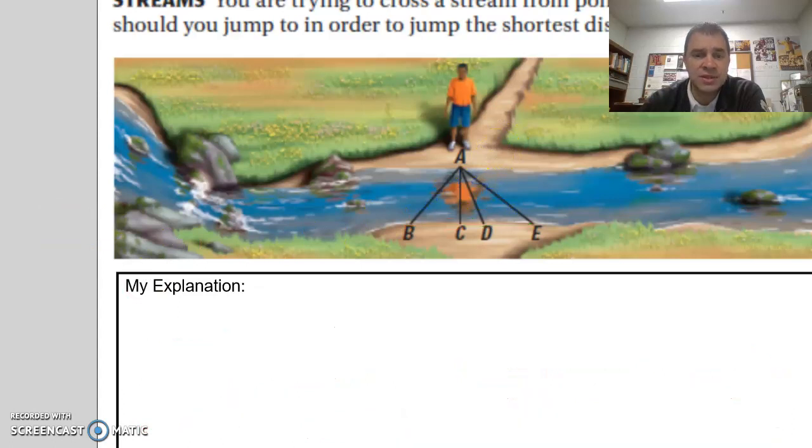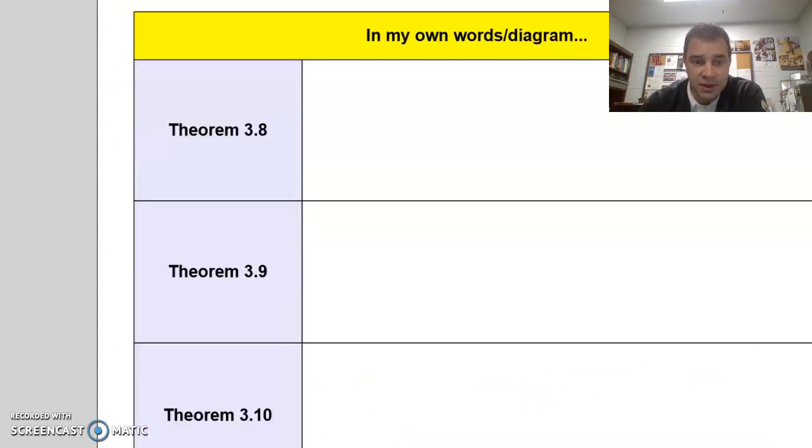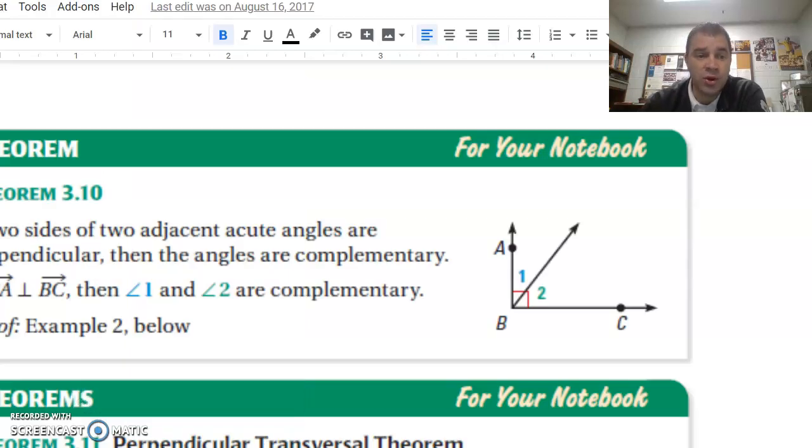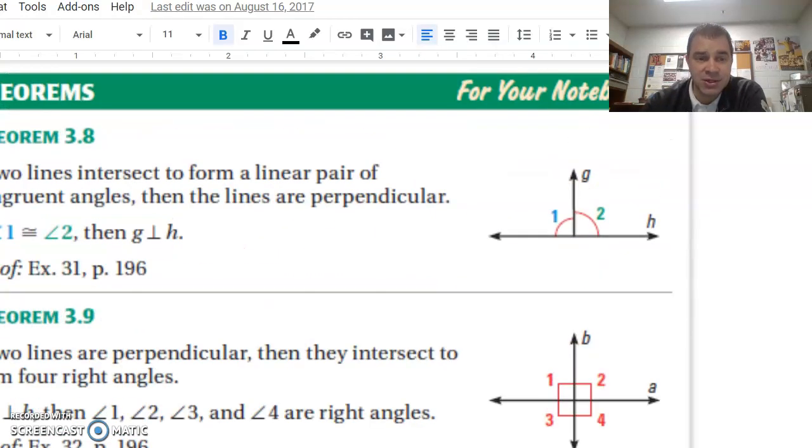Now one other thing I'd like you to do is go to the next part of your notes and we're going to talk about three theorems: Theorem 3.8, 9, and 10. Those you can find in your book or in that sheet of postulates and theorems that I gave you. I just want you to write these in your own words so that they make sense to you.